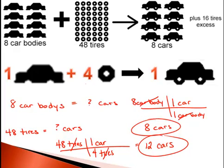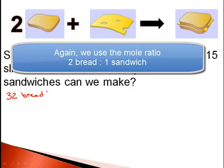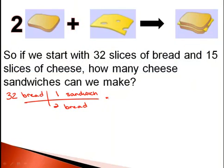Another way to think about this is in making a sandwich. If we started with 32 slices of bread and 15 slices of cheese, how many cheese sandwiches could we make? We start with 32 slices of bread, we know from our balanced equation that we need 2 slices of bread to make 1 sandwich. So in this case, with just the bread, we'd have enough bread to make 16 sandwiches.